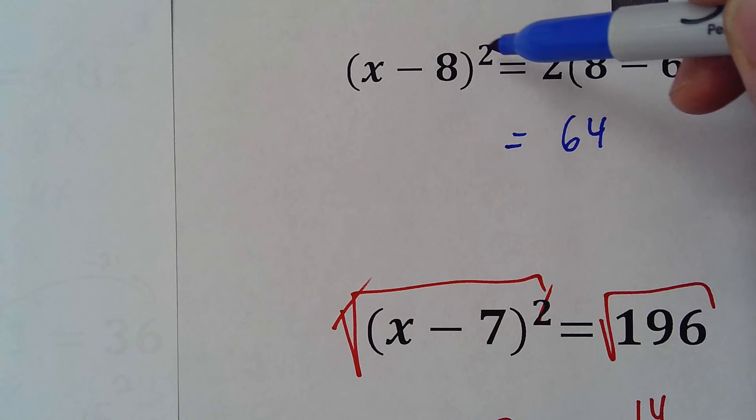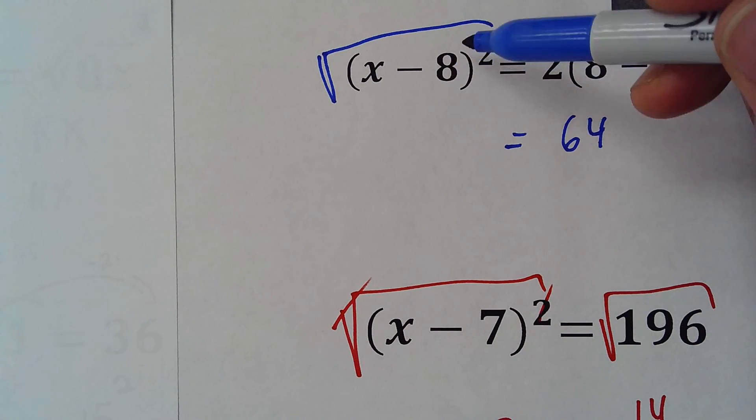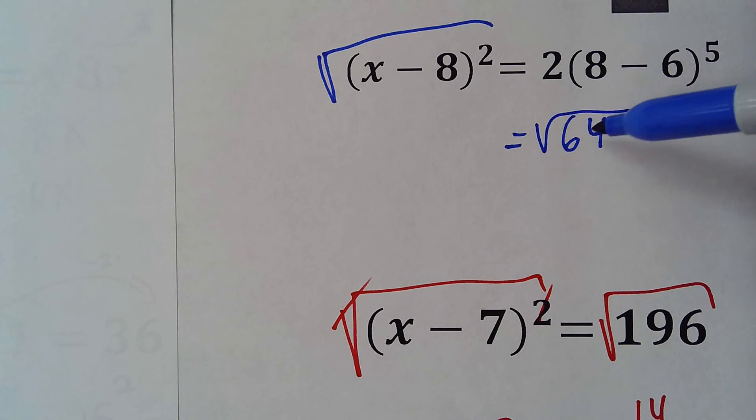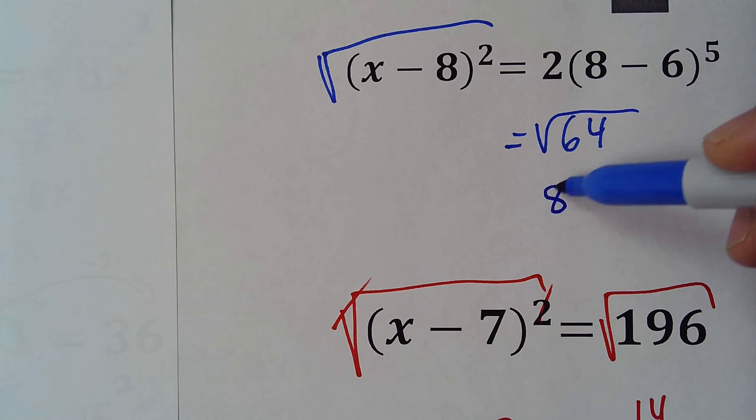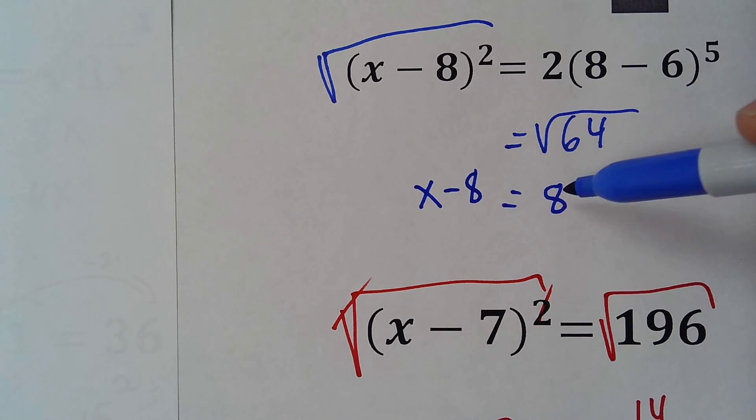Here, now the next step is this. I'm not going to do it here, but just doing it now and do the same with this. Square root of 64 is 8, and this will be x minus 8 equals 8.